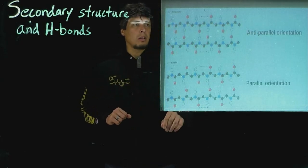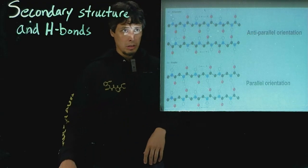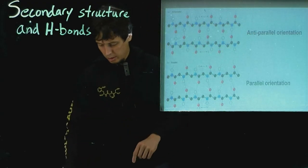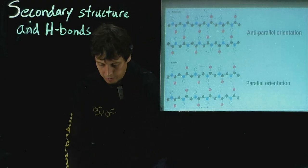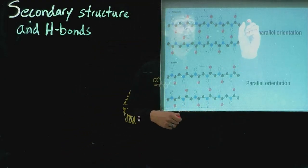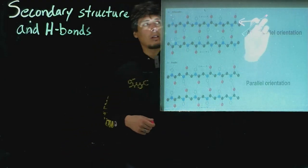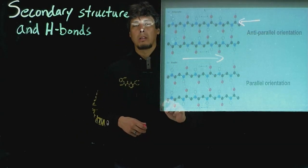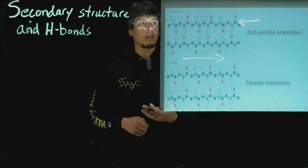So here's an anti-parallel sheet, so let me orient this. So this is N to C. This is hard to see. Sorry about that. So this is going in this direction from the N-terminal side to the C-terminal side, and this bottom strand is going in the opposite direction, so it's anti-parallel.